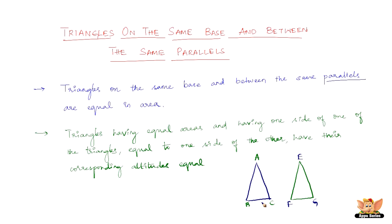Let us consider one side that appears close to equal: AB looks equal to EF, while the others are not — AC is not equal to EG, and BC is not exactly equal to FG. So let us take AB equal to EF. The statement says triangles having equal area — so ABC is equal in area to EFG — and having one side equal to one side of the other (AB = EF), then their corresponding altitudes are equal. Let this altitude be D and that one be H, so AD is equal to EH. That is what the second property says.